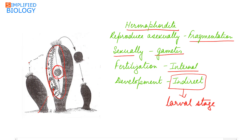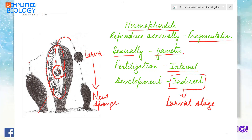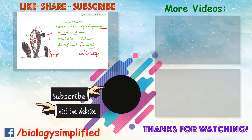Development occurs inside the sponge, and the larva is different from the adult sponge, later growing into the new sponge. These are the characteristics of Phylum Porifera. Please do like, subscribe, and comment, and also visit our website by clicking on the link below. Thank you for watching.